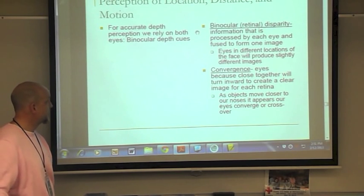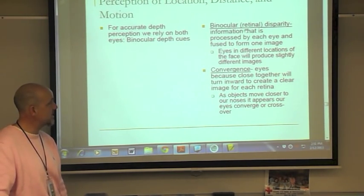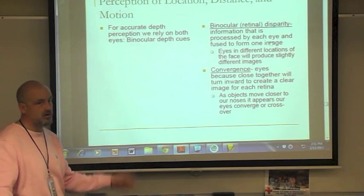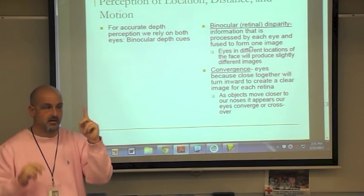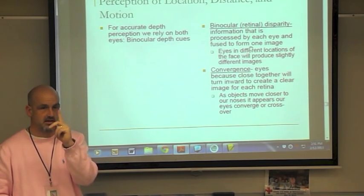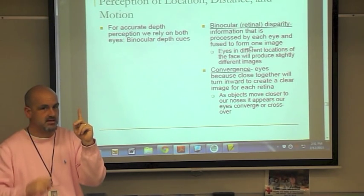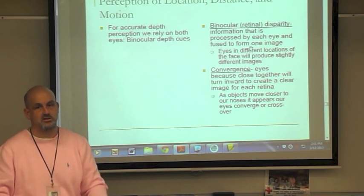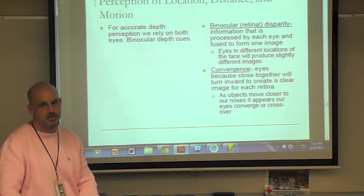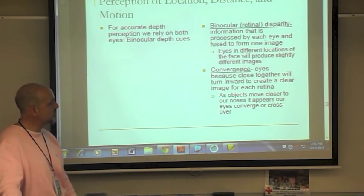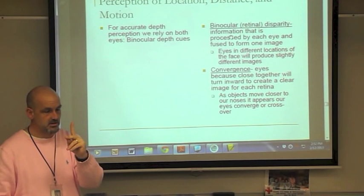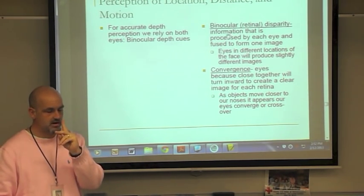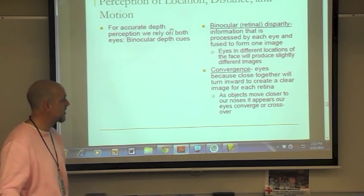For accurate depth perception we rely on binocular depth cues from both eyes. Retinal disparity is the difference in images processed by each eye — since eyes are in different locations, they see objects slightly differently, and both eyes fuse that information to form one image. Convergence refers to the muscle strain felt when focusing on a close object — the more strain on the eyes, the closer the object. Practice question: Which task would be most difficult with only one eye? Inserting a toothpick into a horizontal straw requires both eyes for correct depth judgment.